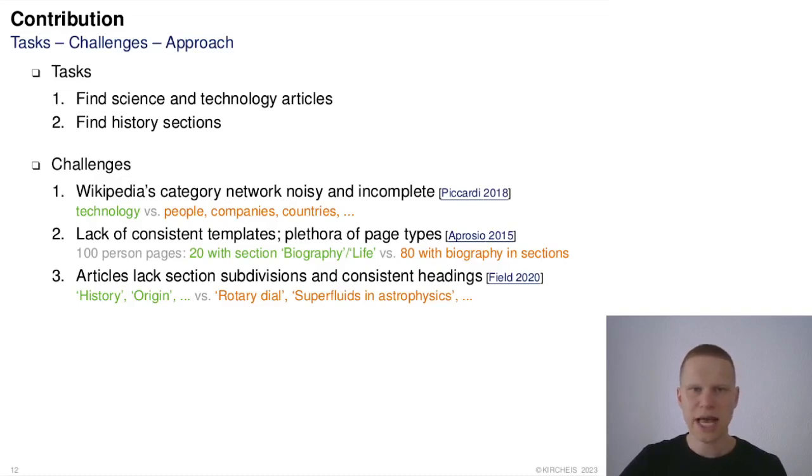First, Wikipedia's category system, while helpful, is noisy and incomplete. Using it to find articles on science and technology will, in addition to articles about innovations, yield articles about people, companies and countries, in which we are not necessarily interested.